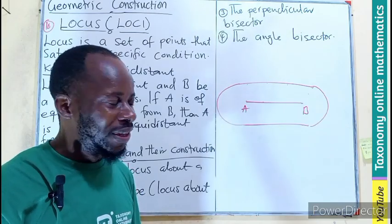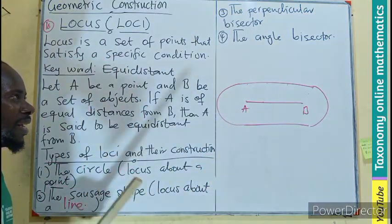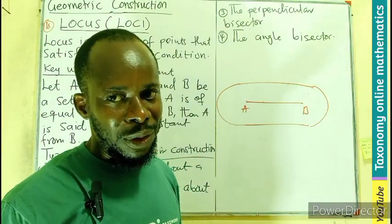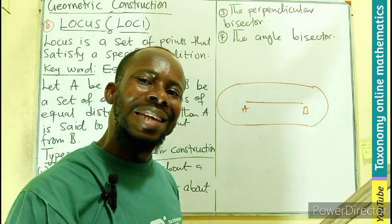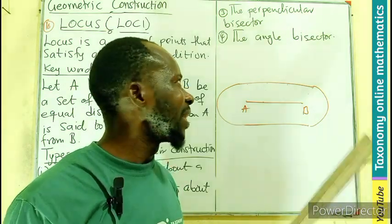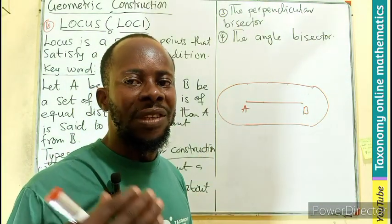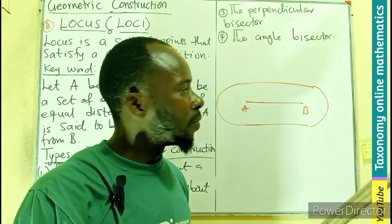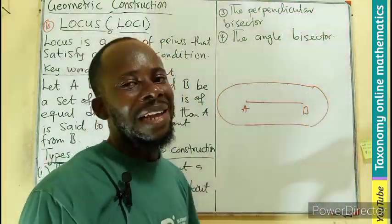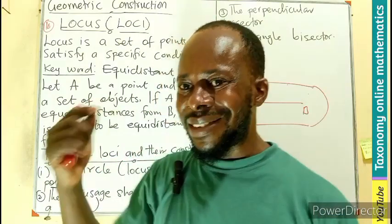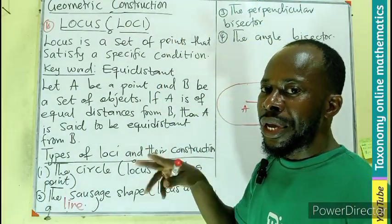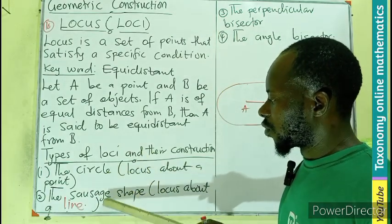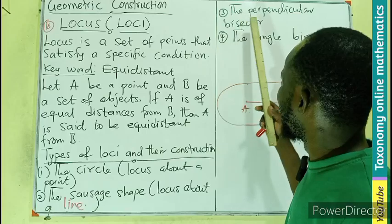So now number three will be a perpendicular bisector. In our previous episode, we dealt with how to bisect a line. So a perpendicular bisector could also have a way of locus described in it, following the same procedure we did in the previous episode. Then an angle bisector, I think we did the bisector of angles also in some previous episodes that we did.